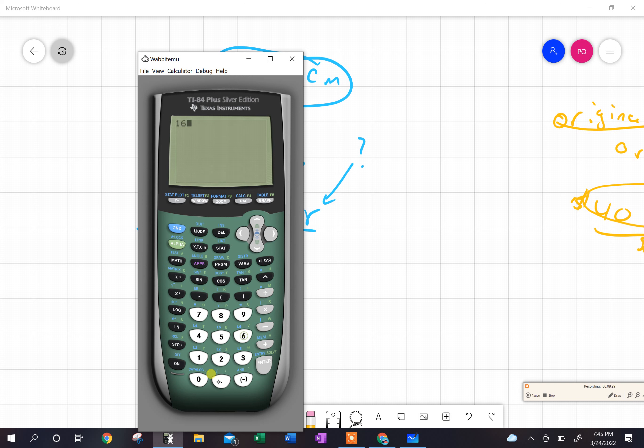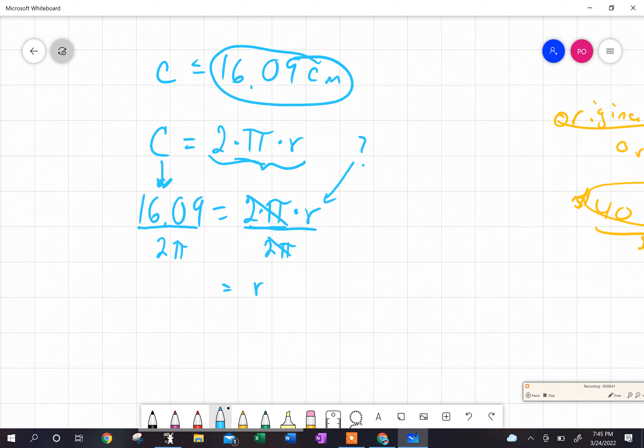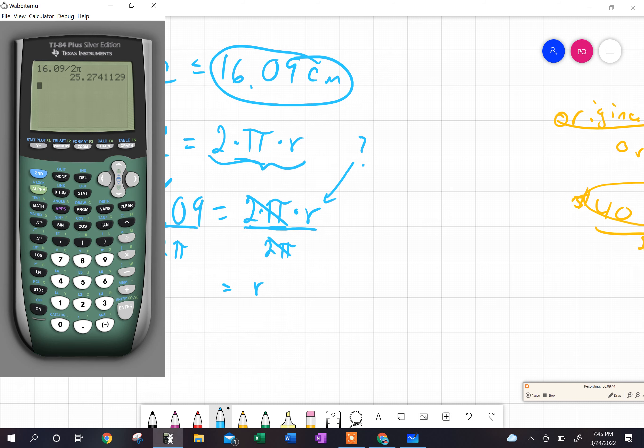16.09 divided by 2π. Now I'm going to go back to my calculator. I'm hoping not to make a mistake. So let's say 16.09 divided by 2π gives me 25.27. Now you should be thinking, wait a second, how is that possible to have a radius of 25 if my circumference was only 16? And here's the reason why.